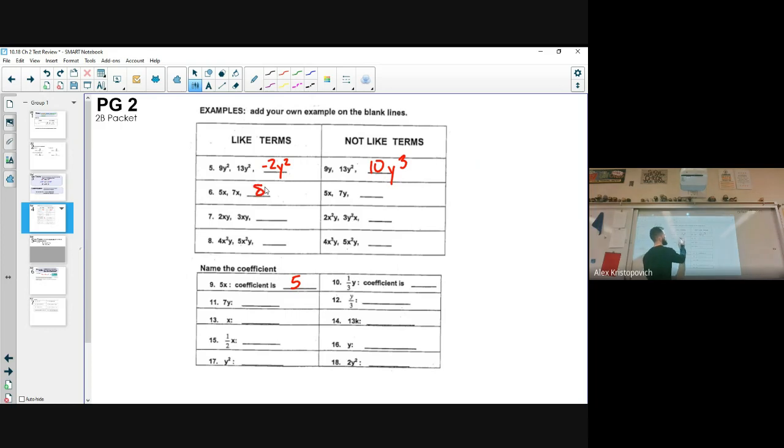Here we go. So 5x, 7x, we can go 8x. 2xy, 3xy, we can go 5xy. And 4x squared y and 5x squared y, let's go with 8x squared y. Okay, again, we're keeping the variables and the exponents exactly the same when we're looking for like terms. Now for unlike terms.